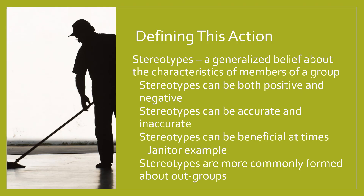My guess is that many of you, when you saw those names, instantly had images of people in those groups who also possessed specific characteristics — be it mental, personality-wise, or something else. Those generalized beliefs we hold toward members of a group are what we call stereotypes. It's really important to highlight that in social psychology we define stereotypes as generalized beliefs about any group, be it positive, negative, or neutral. If you see somebody as a member of a group and automatically infer things about them — whether positive, negative, or neutral — you're using a stereotype.